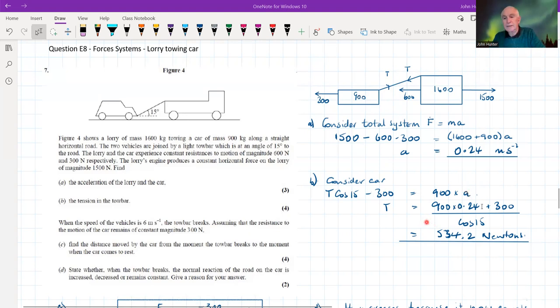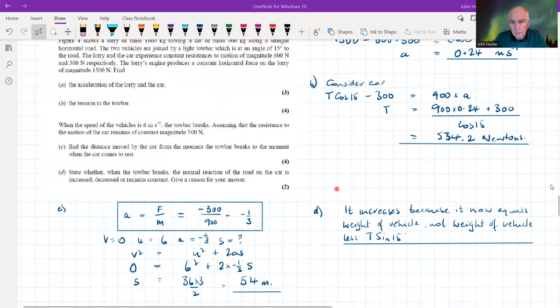Minus 300 equals the mass times acceleration which we've already calculated. That gives us an equation in T. We plug a in there, add 300 to each side and divide by cos 15, giving us an answer of 534.2 newtons. That's a very typical kind of system of particles problem.